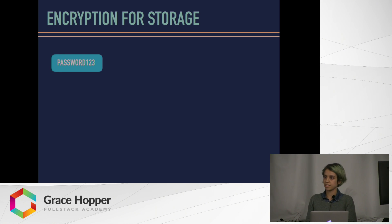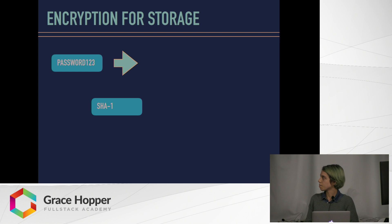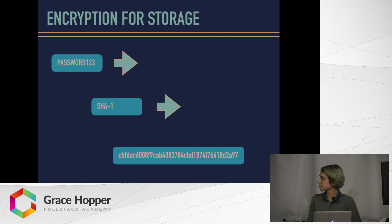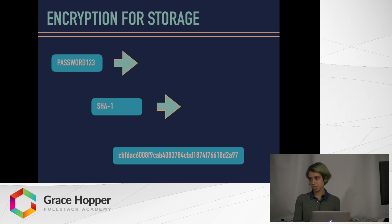Let's say you have something that is a sensitive piece of information such as a password. You take that password, you put it through a hashing algorithm. This is SHA-1, which is of the SHA family — a popular and pretty common algorithm for hashing functions. So you take the password, put it through SHA-1, and you get out this hash. That is the actual hash that you get when you put in 'password123' into SHA-1.